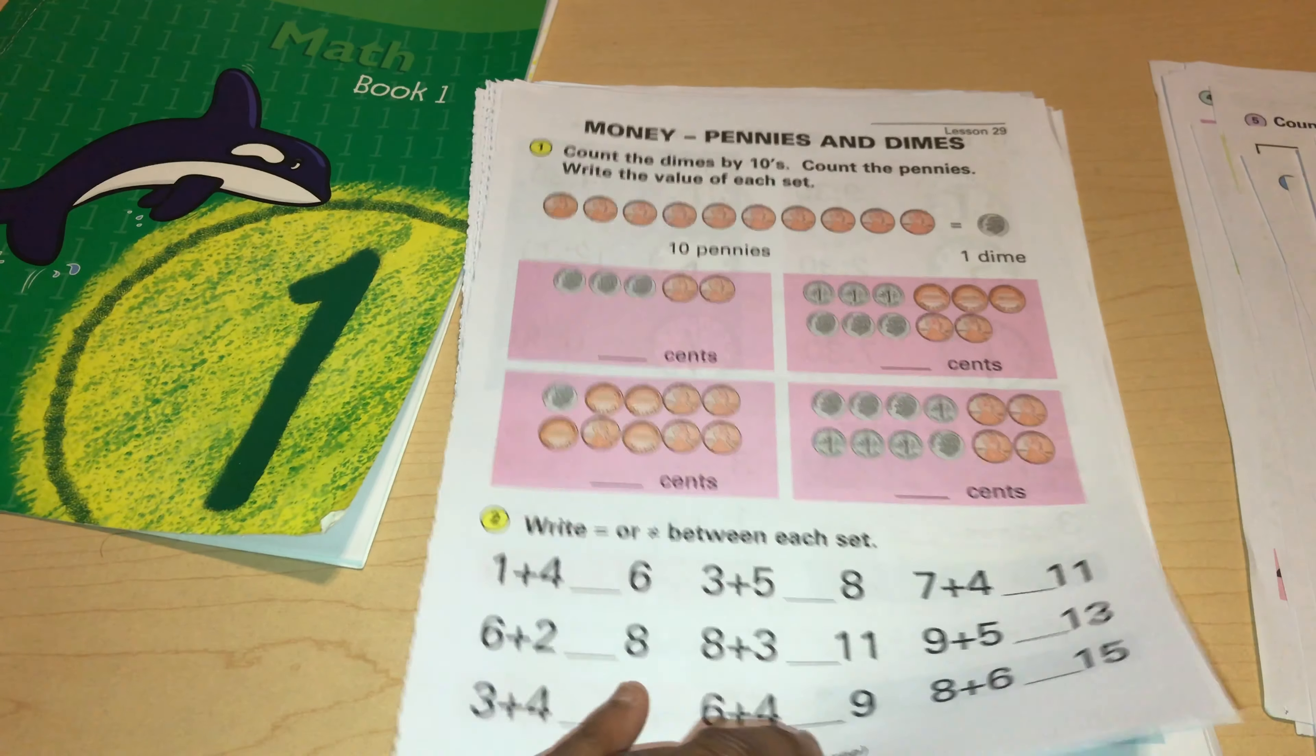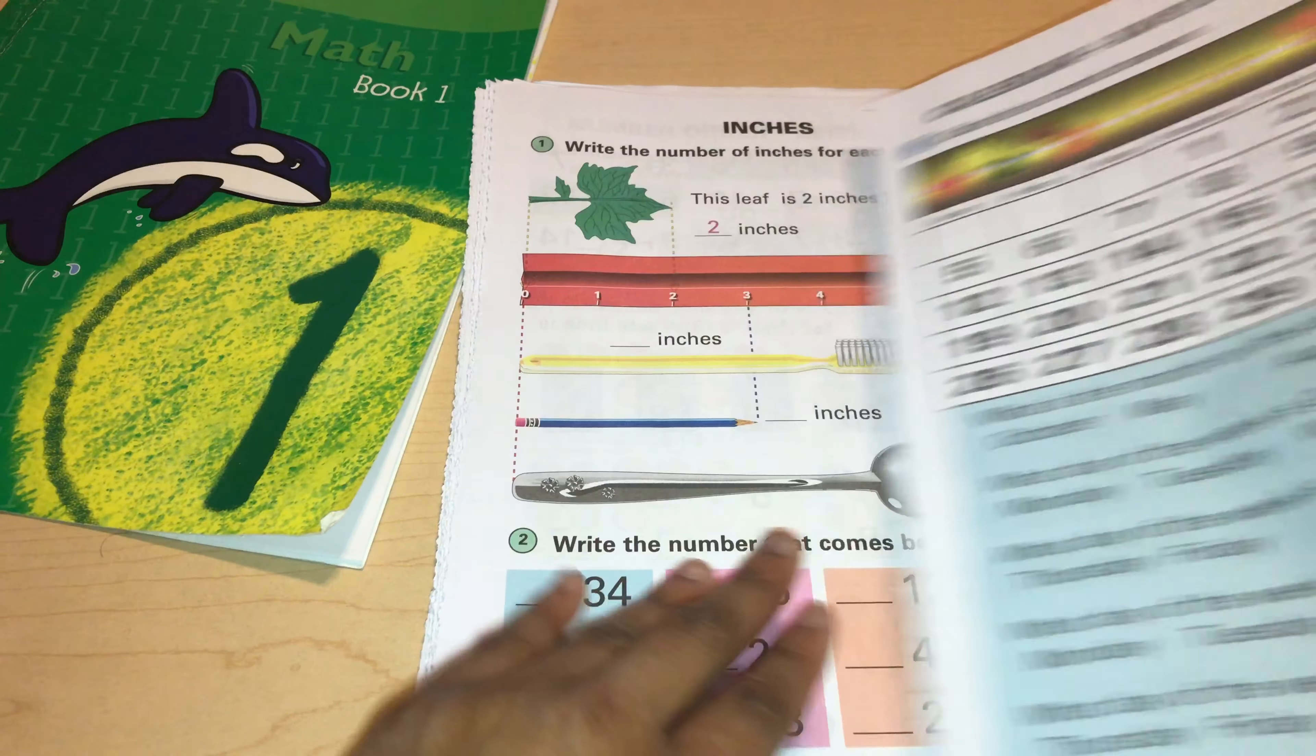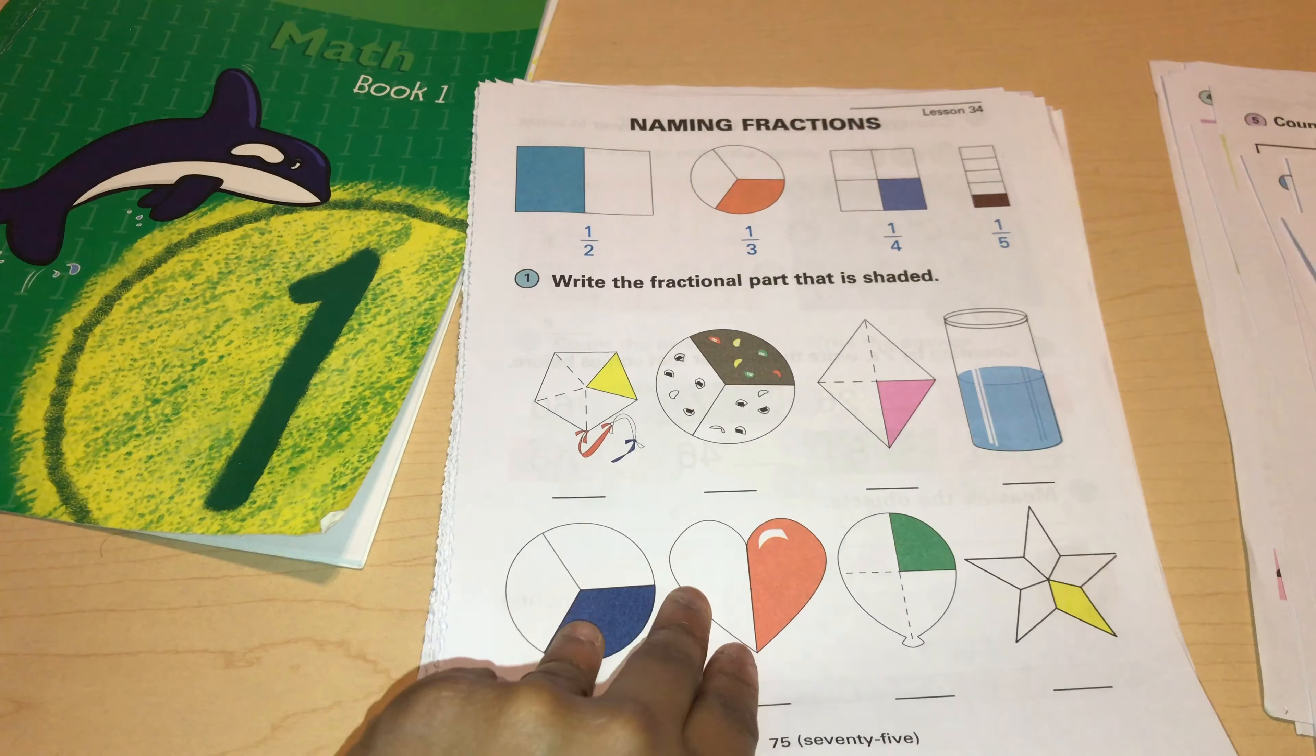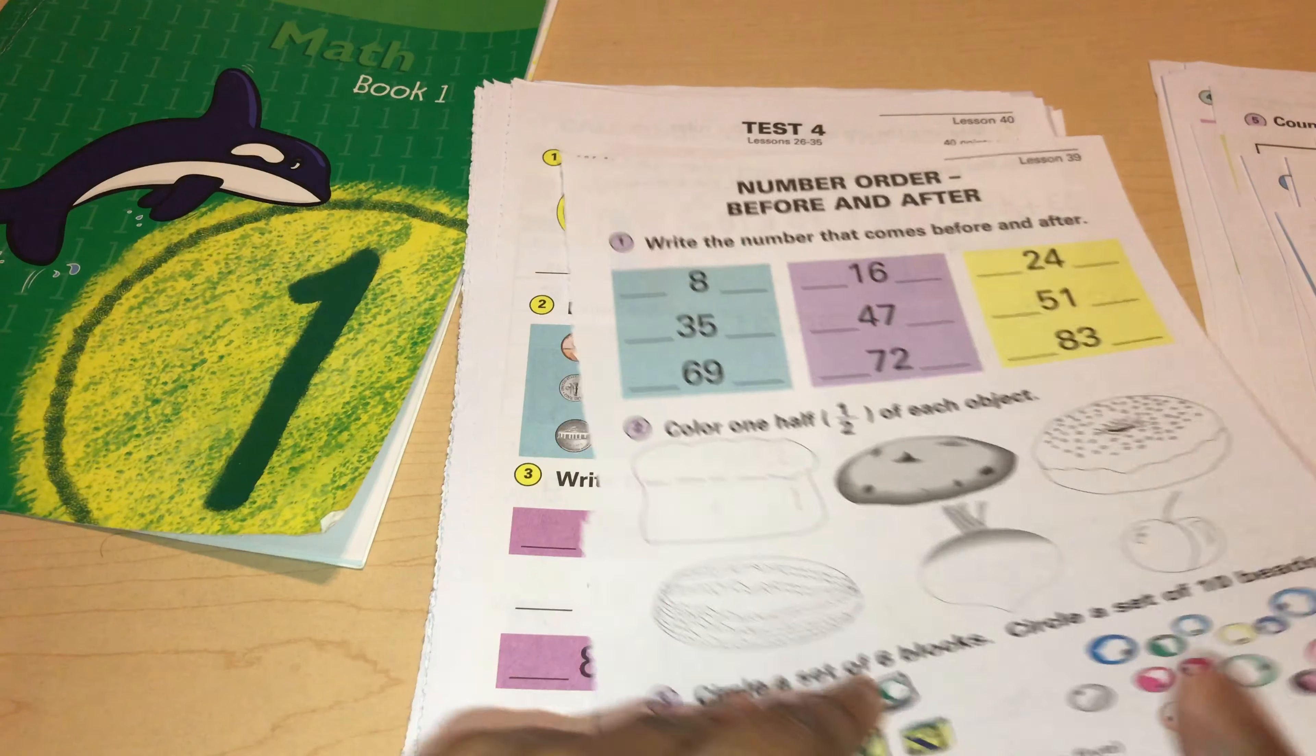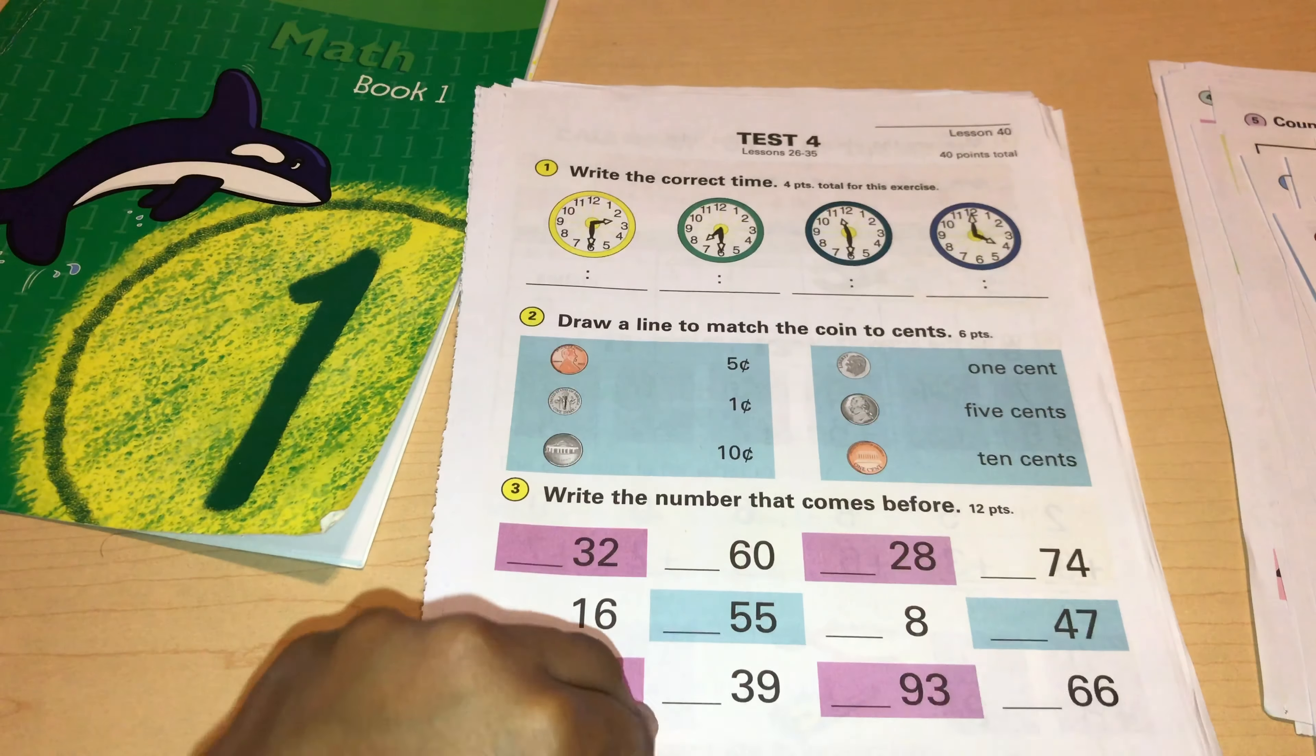Here's money. Introducing pennies and dimes. Here's the calendar as well. Inches. Number order before two. Here's fractions.